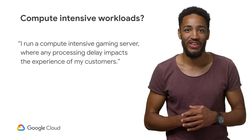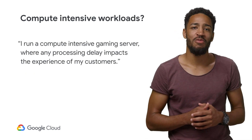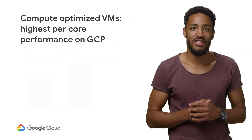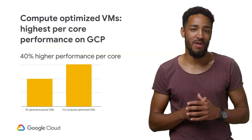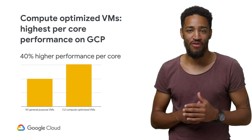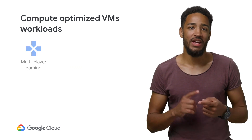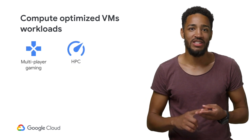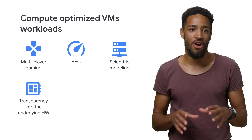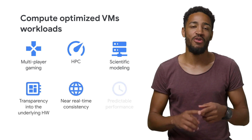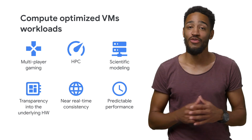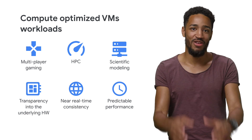But what about applications with more specialized CPU or storage needs? If you need cutting-edge processing power for intensive workloads, that's where compute optimized VMs come into play. These offer the highest performance per core available on GCP and are a great fit for AAA gaming, high performance computing, and some types of scientific modeling. You get full transparency to the underlying hardware, tight consistency, and predictable performance, so you can bet your most intensive application on these VMs.